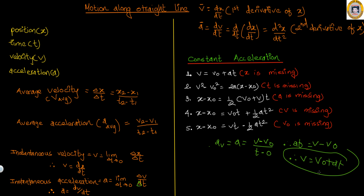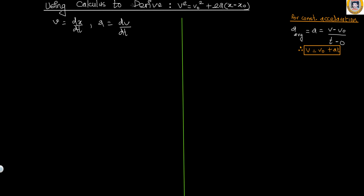Now we are going to use the method of calculus to derive the equation v² equals v-naught² plus 2a times (x minus x-naught). To do so, let me first define velocity and acceleration again: velocity is the first derivative of x with respect to time.